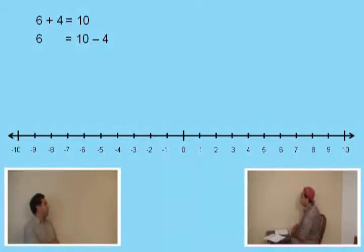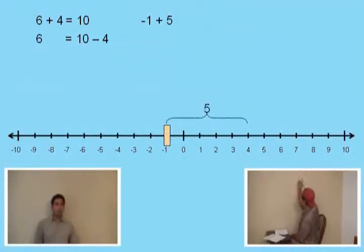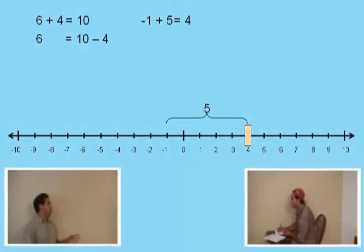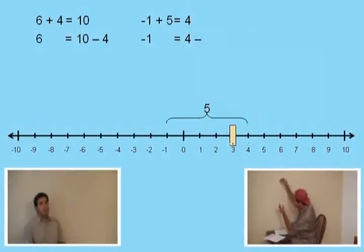Okay. So let's go to this next addition problem, negative 1 plus 5. Okay Charlie, what's negative 1 plus 5? 4. It is 4. Correct. Now Charlie, what number do you subtract from 4 to get negative 1? 5. The number line there? Yes, it is 5.